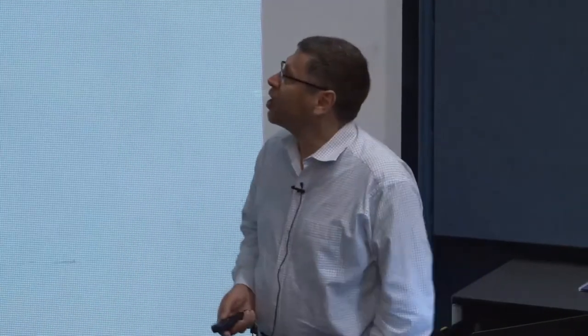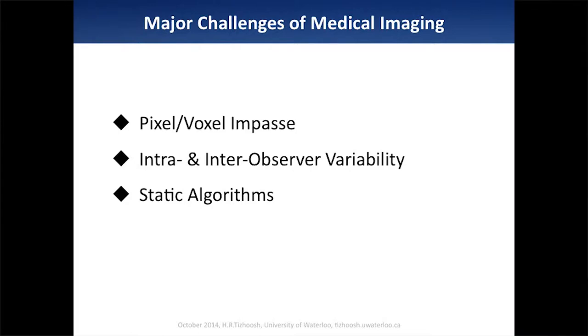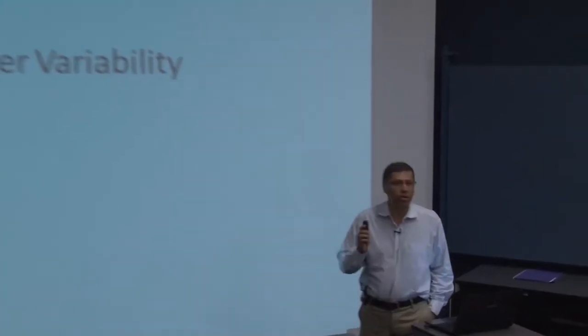These are problems that in my understanding are preventing medical imaging from making any breakthrough. The three main problems of medical imaging are pixel, voxel, and impasse. As long as we are working with pixels — generating pixels, capturing pixels — nothing big will happen. We have to come up with something else: a completely different generation of sensors and imaging devices that do not capture pixels or voxels.